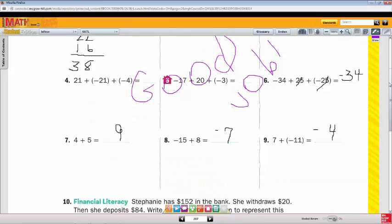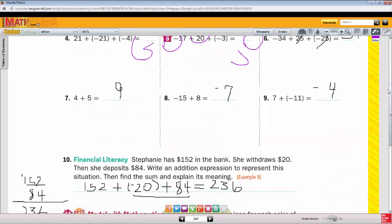I can scroll down and continue to check the work. I'm looking at this financial literacy problem. Stephanie has $152 in the bank, she withdraws $20, then deposits $84. We've asked the student to write an expression for the situation, then find the sum and explain its meaning.